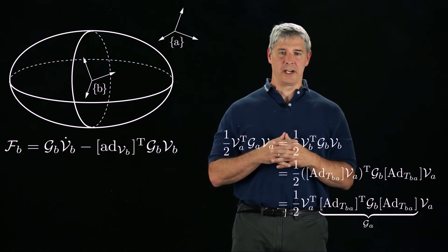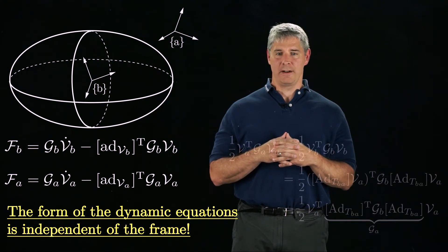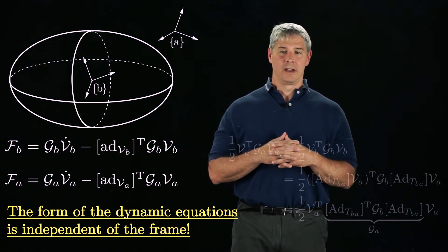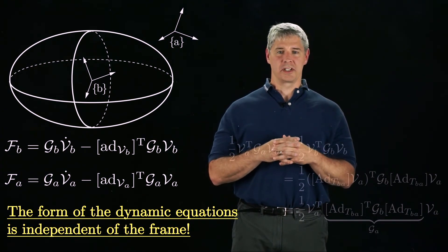With this inertia matrix, we find that the equation of motion in terms of the wrench FA, the spatial inertia matrix GA, and the twist VA has the same form as it does in the B frame. We usually prefer to write the equations in terms of a center of mass frame, B, however.